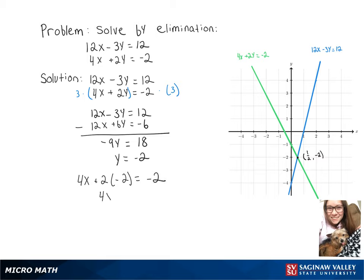So that gives us 4x plus 2 times negative 2 equals negative 2. And then 4x minus 4 equals negative 2. Simplifying that, we get x equals 1 half.